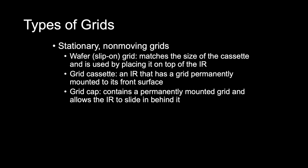Grids are available for use by the radiographer in several forms, and they can be stationary or moving. Stationary, non-moving grids include the wafer or slip-on grid, the grid cassette, and the grid cap. A wafer grid matches the size of the cassette and is used by placing it on top of the IR, typically taped to prevent sliding. A grid cassette is an IR with a grid permanently mounted to its front surface. The grid cap contains a permanently mounted grid and allows the IR to slide in behind it or snaps on the front of the IR.